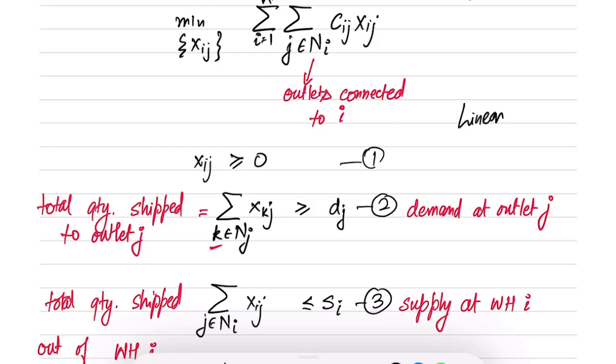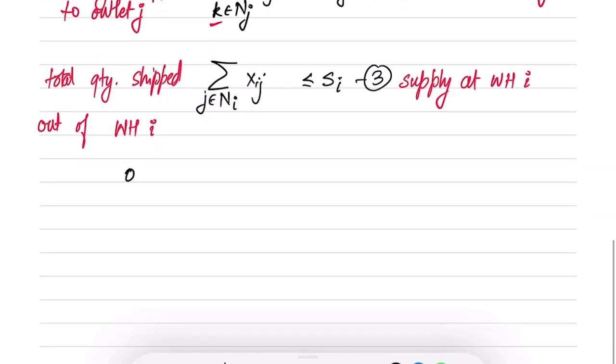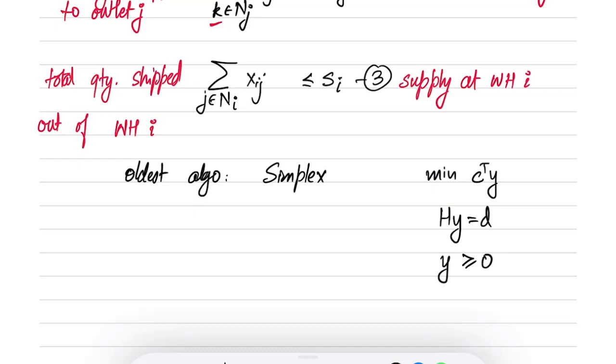Similar linear programs arise in all sorts of areas which involve logistics or planning or e-commerce. Having discussed linear programming, it is important to discuss its history. The oldest algorithm used for linear programming is the so-called simplex algorithm. It requires you to express the whole problem as minimize c transpose y, hy equal to d, and y greater than or equal to 0.